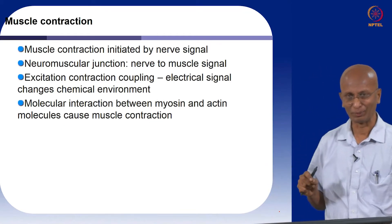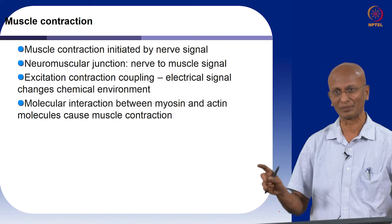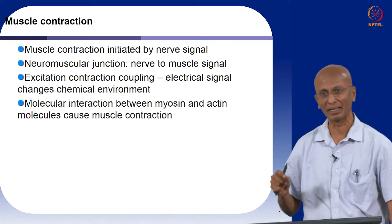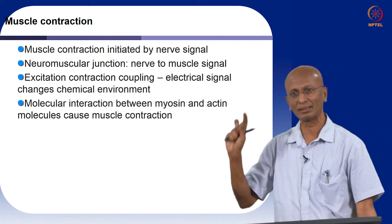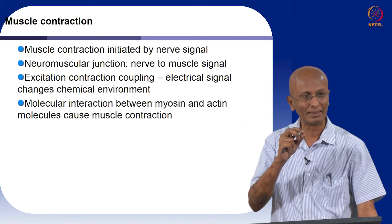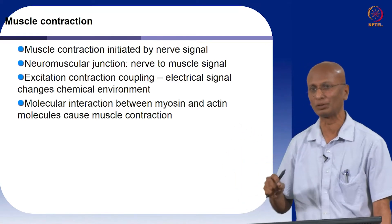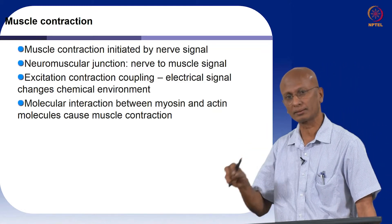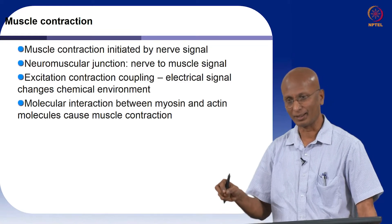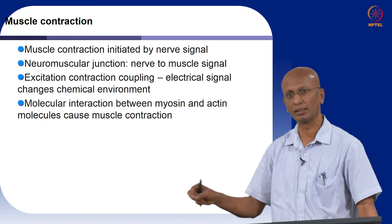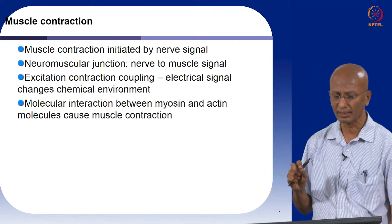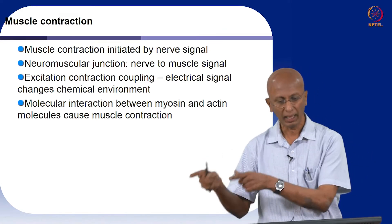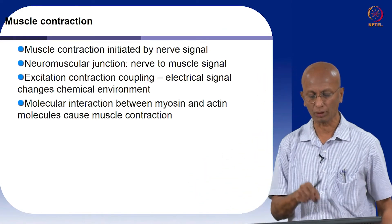How do muscles contract? First, a little revision of facts you already know. Muscle contraction is initiated by a nerve signal — ultimately, the nerve signals arise from the desire of the organism to move. The desire is converted into a signal that goes to the spinal cord, and from the spinal cord another nerve signal goes to the muscle. There is a connection between the motor nerve that controls the muscle and the muscle itself, and that is called the neuromuscular junction.